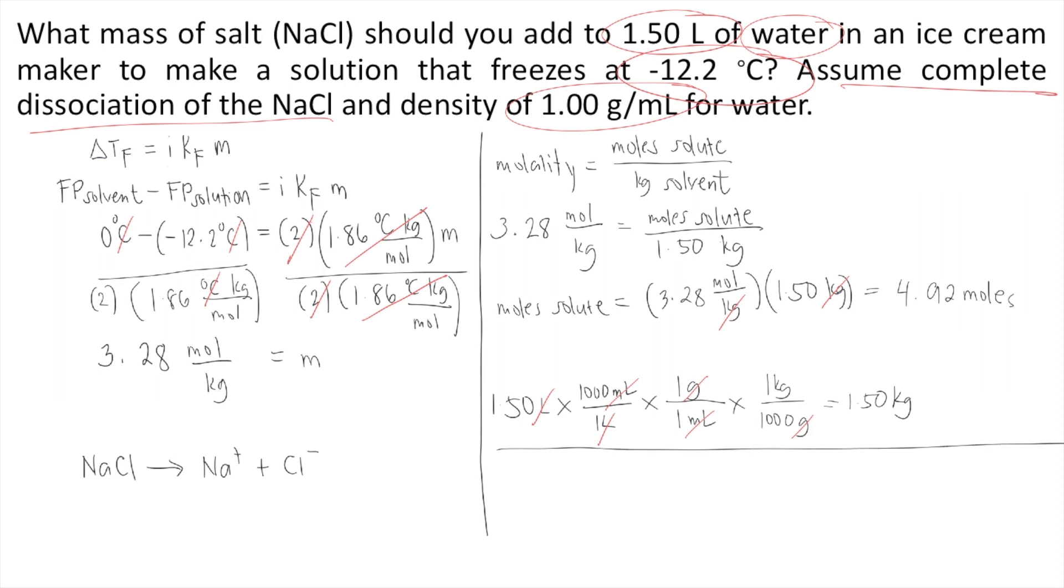And the problem is asking for the mass of NaCl. So we have 4.92 moles of NaCl. So we need the molar mass of NaCl. So 1 mole of NaCl, the molar mass of NaCl, if you solve it using your periodic table of elements, that's 58.44 grams of NaCl. So the moles would cancel out. And this gives us the grams of NaCl. And if you solve that in your calculator, 4.92 times 58.44, the answer would be 287.5 grams of NaCl. And this is the answer to the question. Thank you.